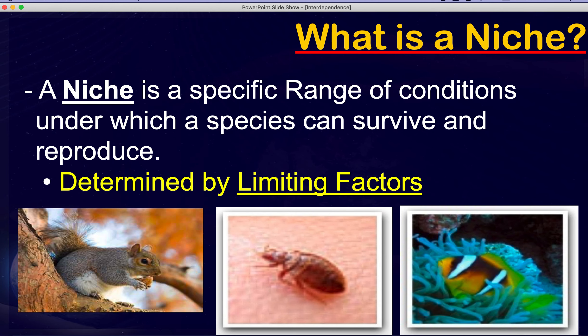The first thing we need to talk about is the term niche — the specific range of conditions under which a species can survive. An animal in the North Pole has a very different range of conditions than one in the jungle, where it may have to maneuver around many more things in order to survive and reproduce.